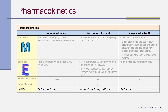The half-life of apixaban ranges from 8 to 15 hours, averaging 12 hours. For rivaroxaban, the half-life is 5 to 9 hours in healthy individuals and 11 to 13 hours in elderly patients. For dabigatran, the half-life ranges from 12 to 17 hours.